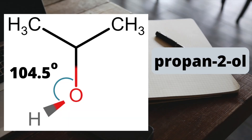Surrounding the oxygen in the alcohol functional group, we find that there are two bond pairs of electrons and two lone pairs of electrons. As a result, the shape surrounding the oxygen is non-linear and the bond angle, which you should remember from module 2, is 104.5 degrees.